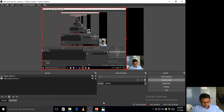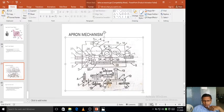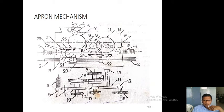Hello friends, here today we are discussing about the apron mechanism. Apron mechanism is set at the lower part of the carriage. How apron mechanism works, we will see by this block diagram.